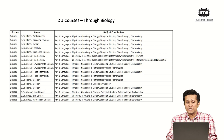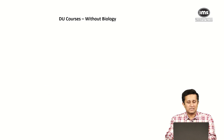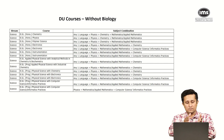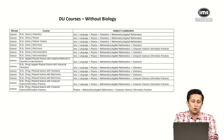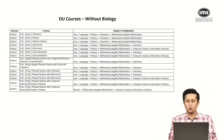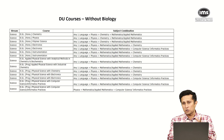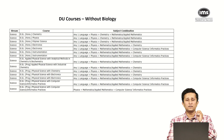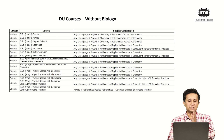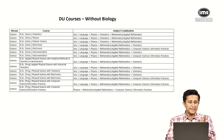What if you studied maths instead of bio? Then you get more courses on the computers and electronics side. The first ones — honors in chemistry and physics — have a clear-cut fixed combination: one language, physics, chemistry, maths. In fact, that applies to the niche course on polymer science as well.